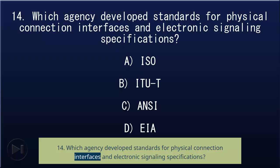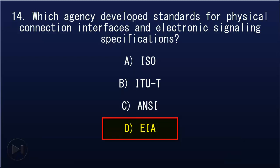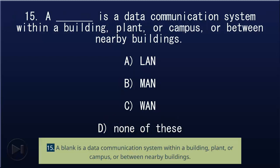14. Which agency developed standards for physical connection interfaces and electronic signaling specifications: A) ISO, B) ITU-T, C) ANSI, D) EIA. Answer: D, EIA.